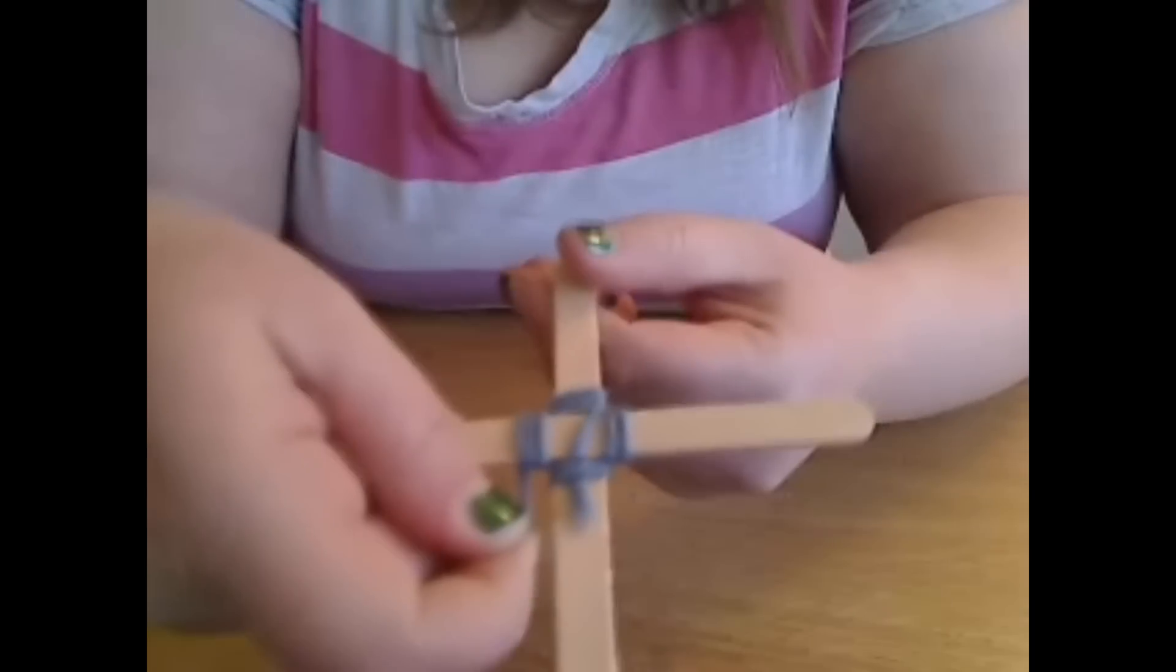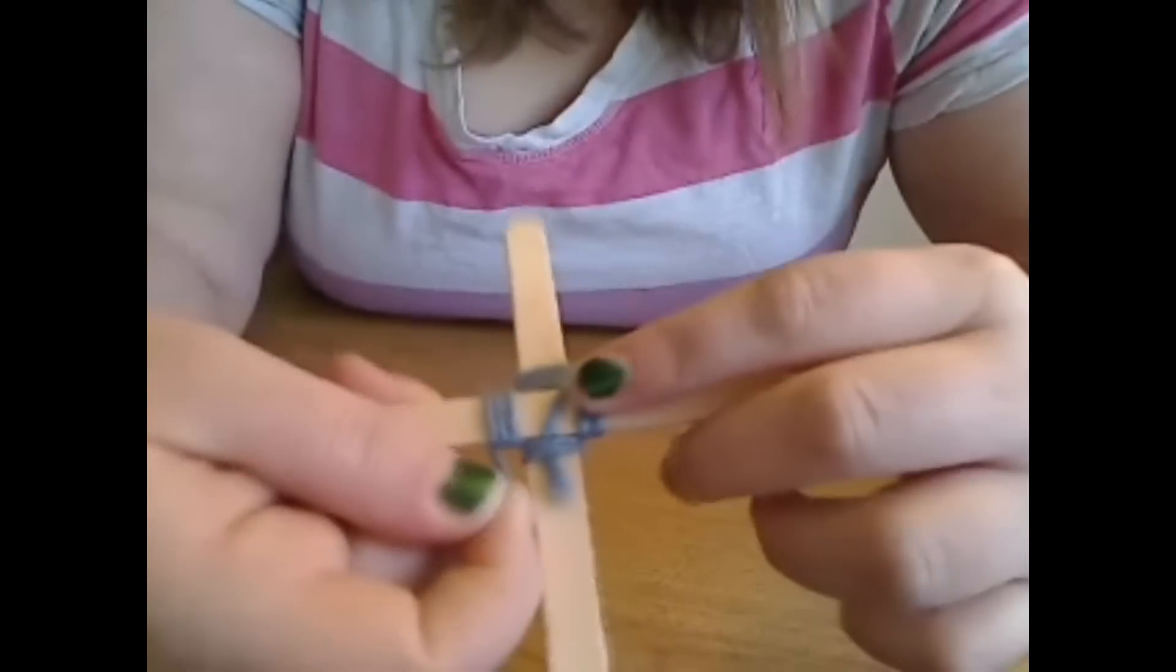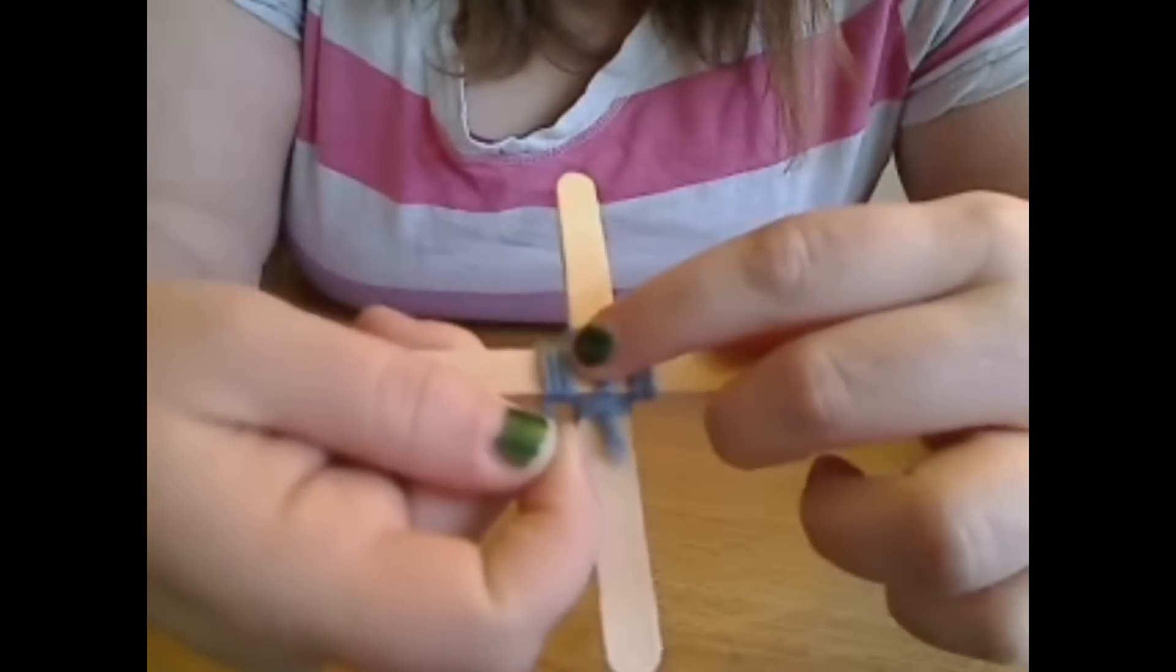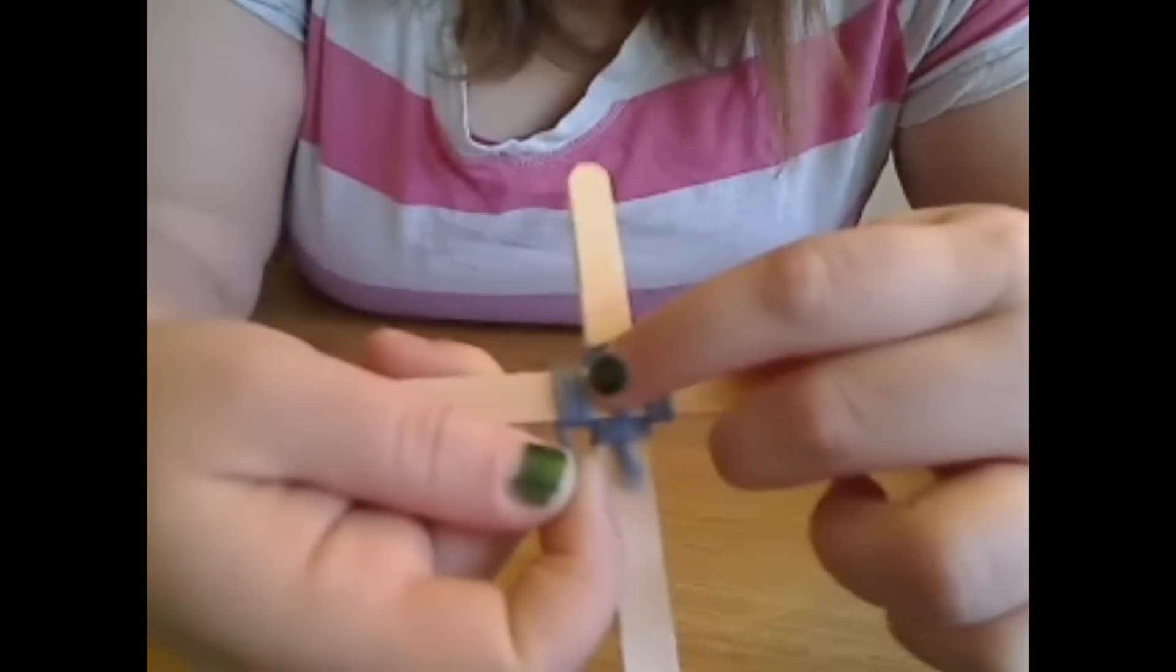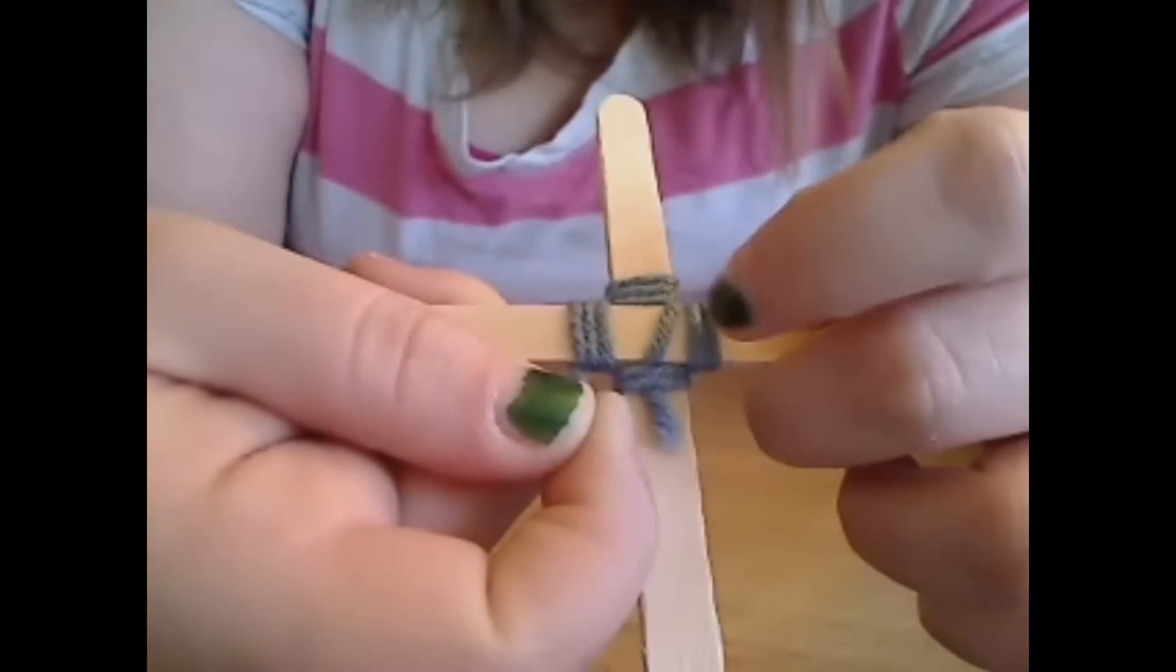As you're threading the yarn onto the popsicle sticks, make sure that you keep the yarn pretty close to the one you threaded on before, so they're in a nice even line.